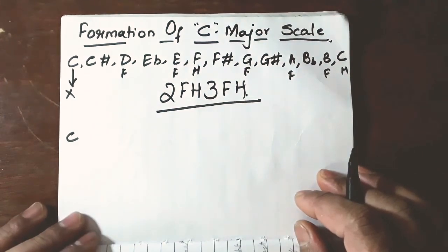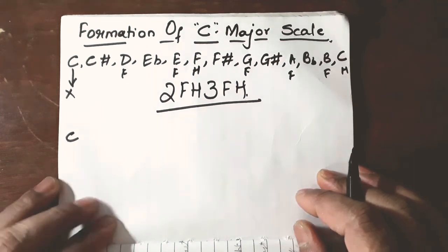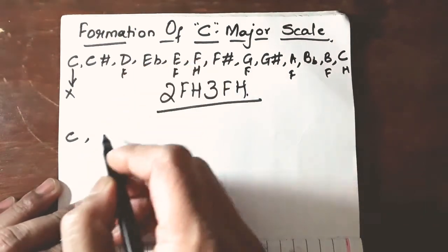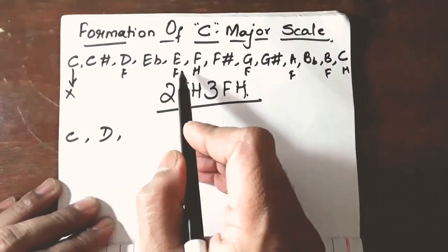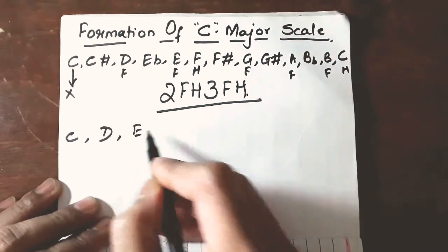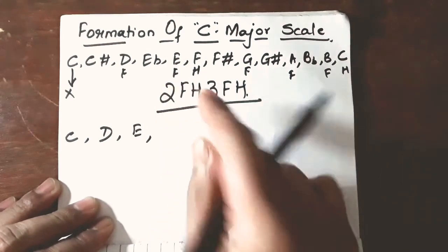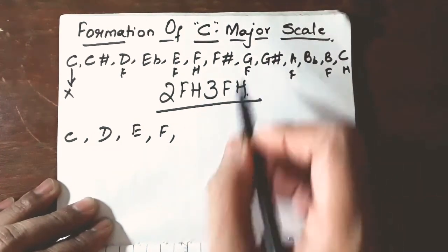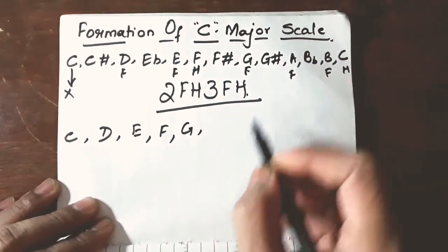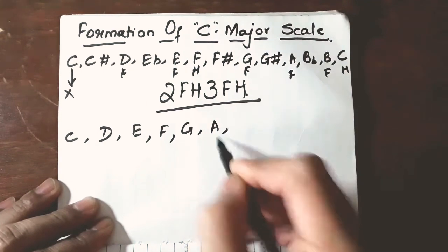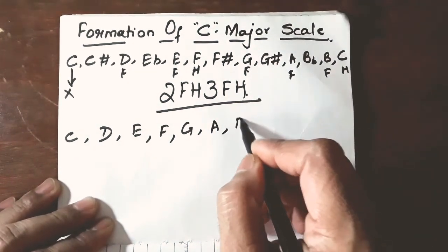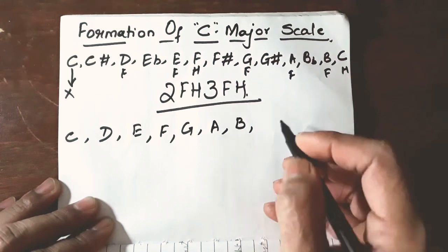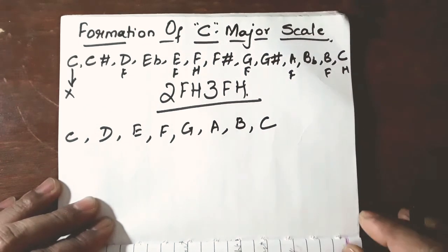So, let us write down all the notes that we have selected using the formula 2FH 3FH. After C it is D after D it is E after E it is F then G then A then B and then C right.